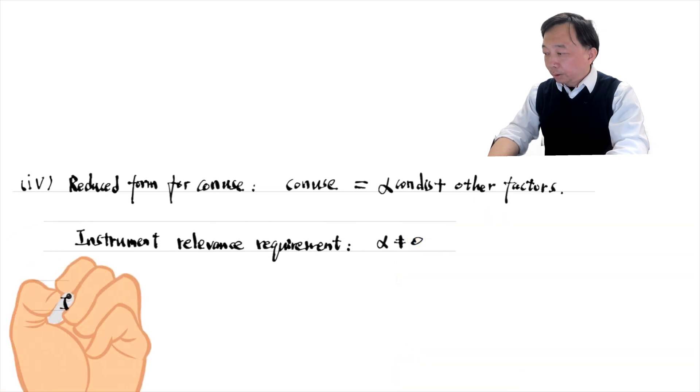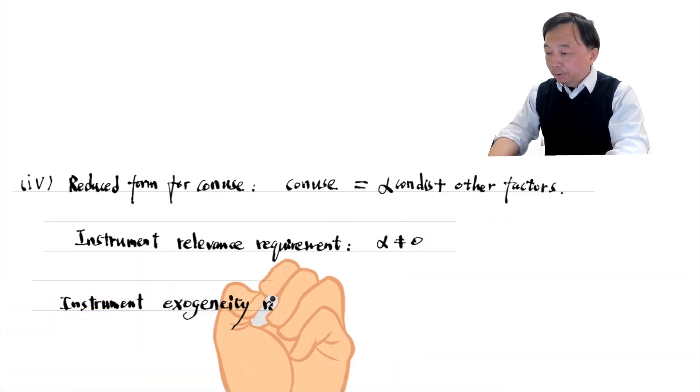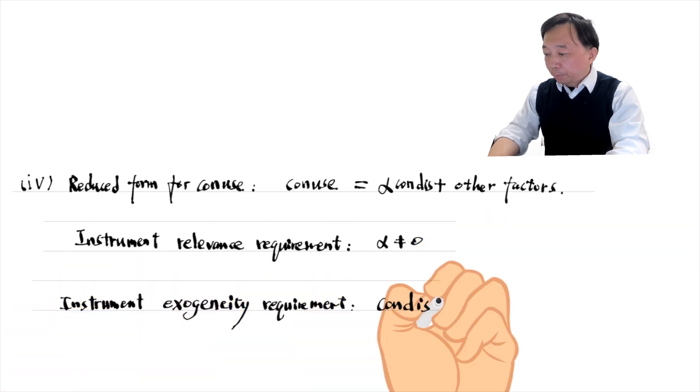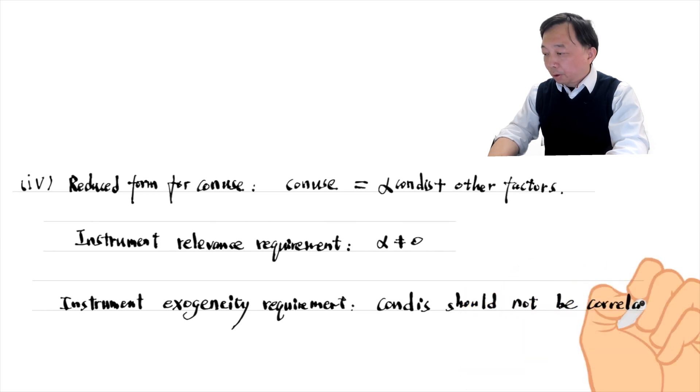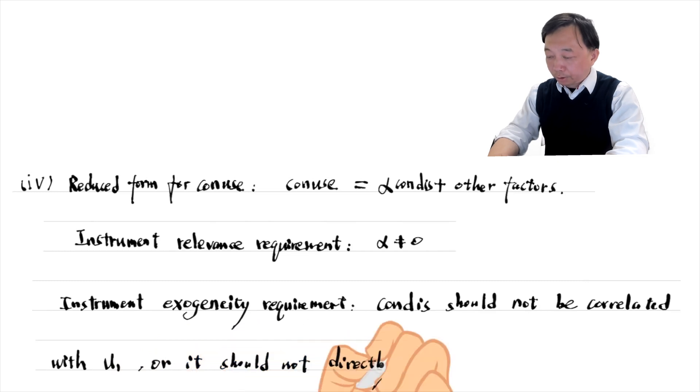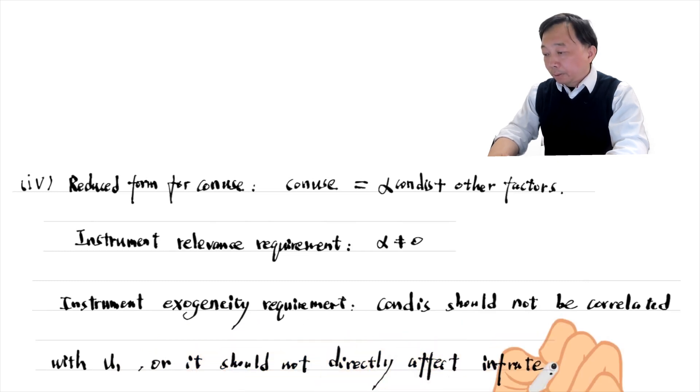The instrument exogeneity requirement is that the condom distribution should not be correlated with the error term mu1 in the equation for infection rate, or the condom distribution should not directly affect the infection.